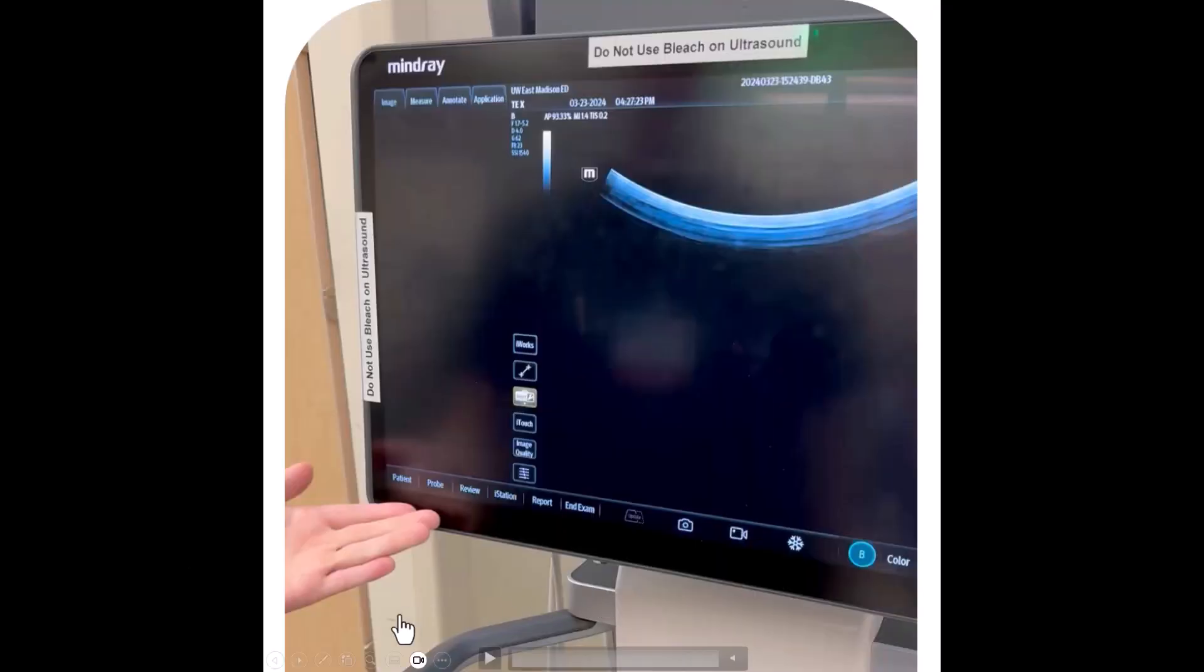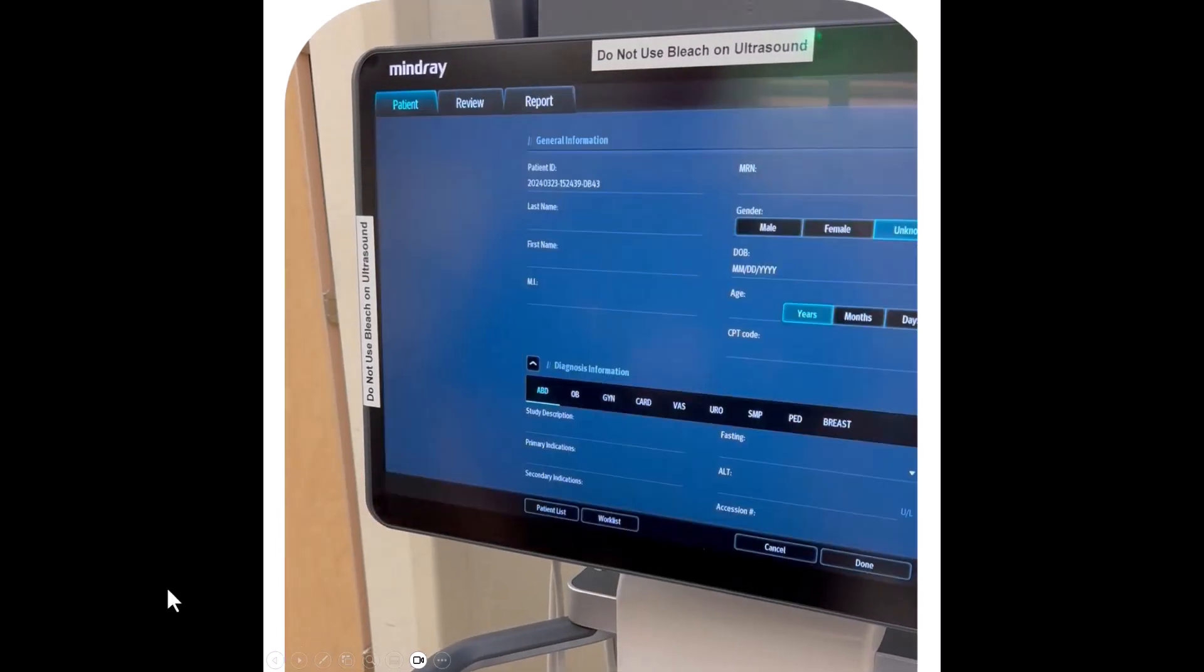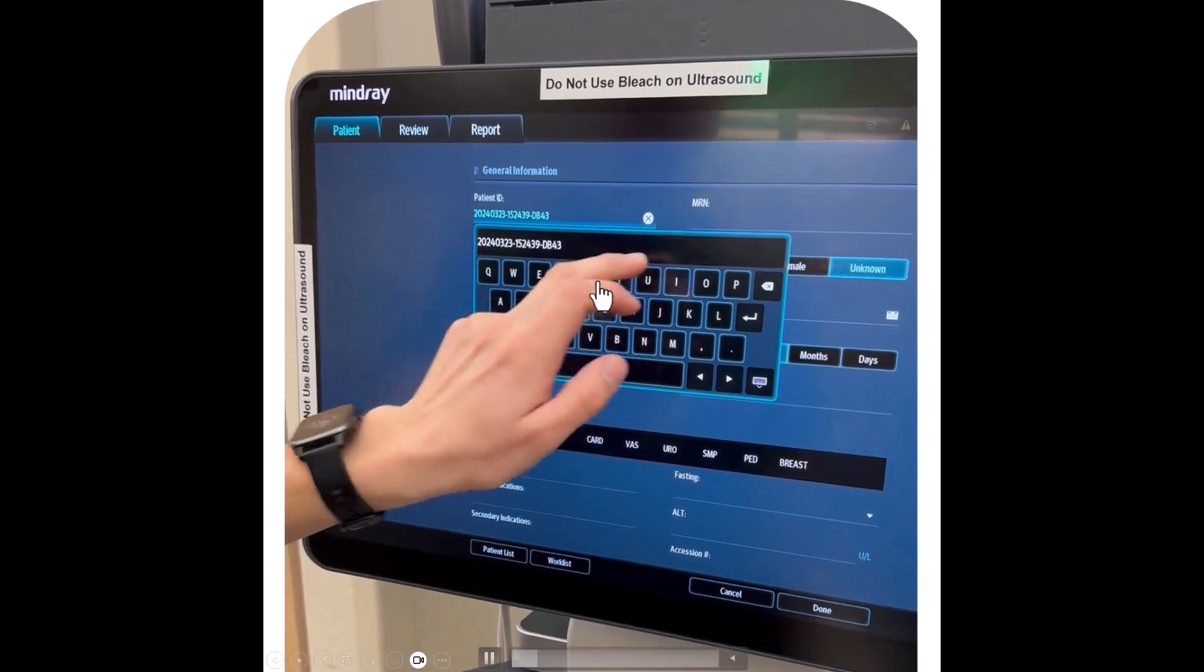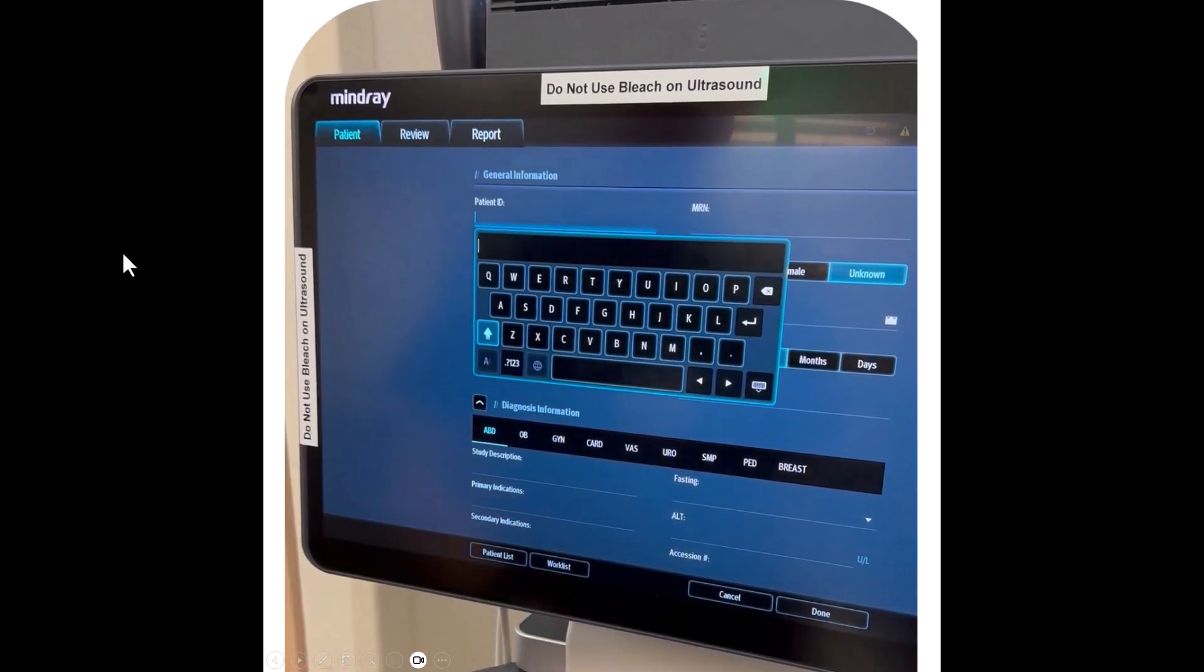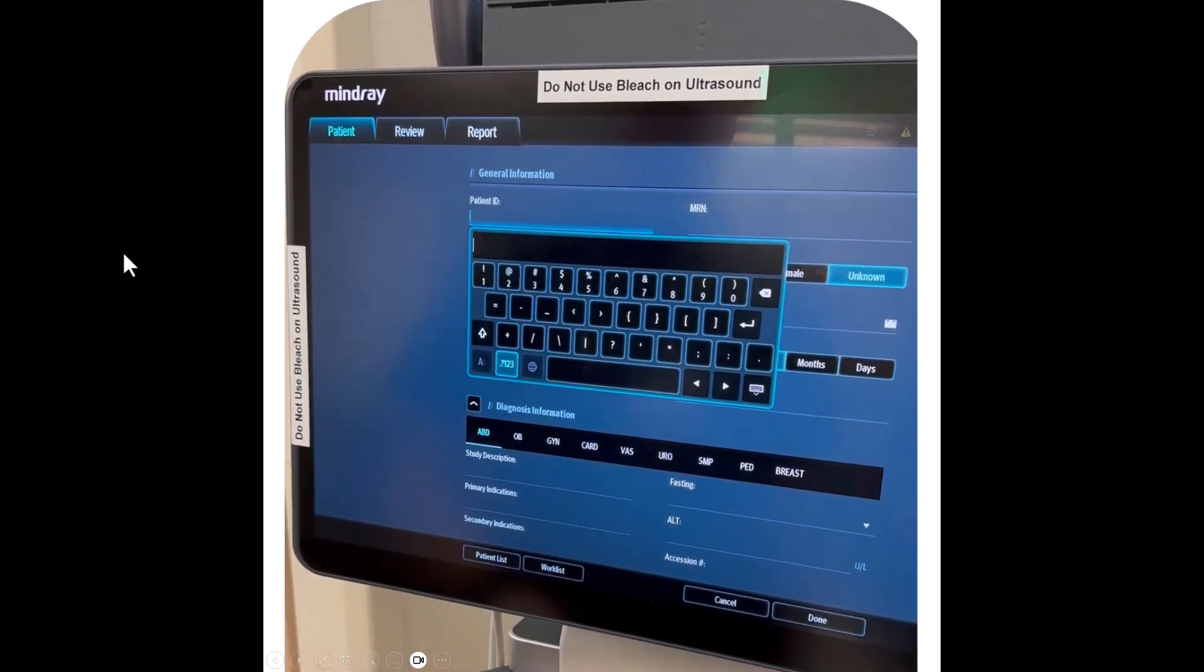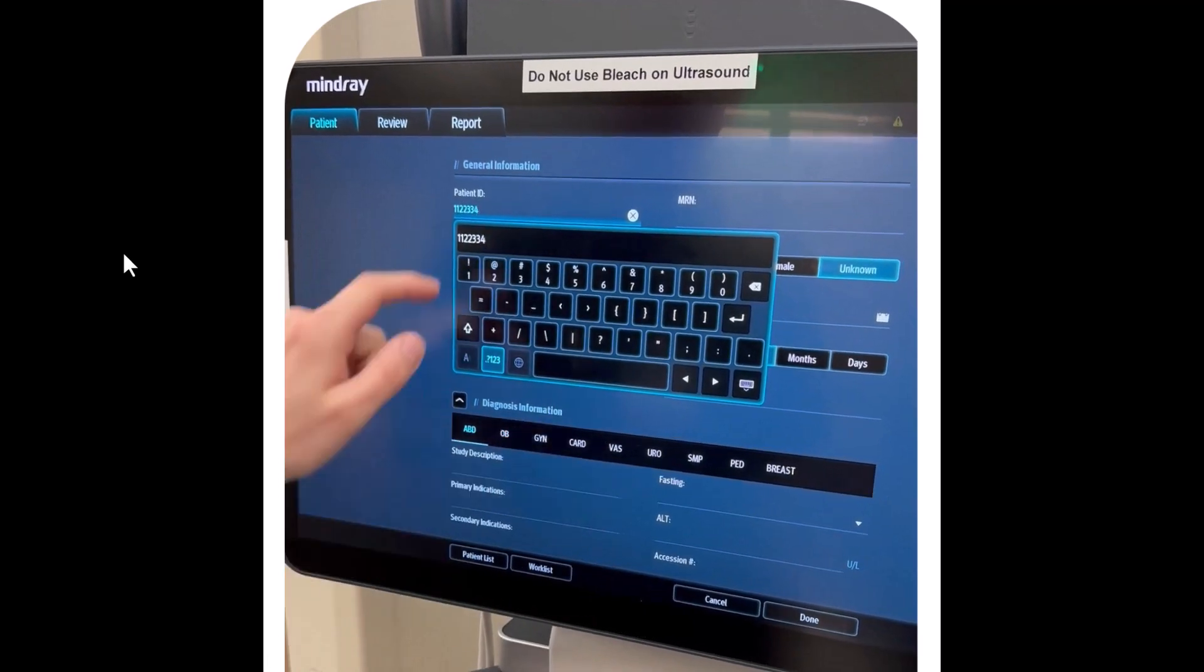We'll now talk about entering in patient information. On the bottom left side of the screen, you'll see this patient button here. Start by clicking that, and that'll pull up the worksheet. Really important is the patient's medical record number is going to go under this patient ID field. Click the X to delete the information that's in there, and then enter in the patient's MRN.